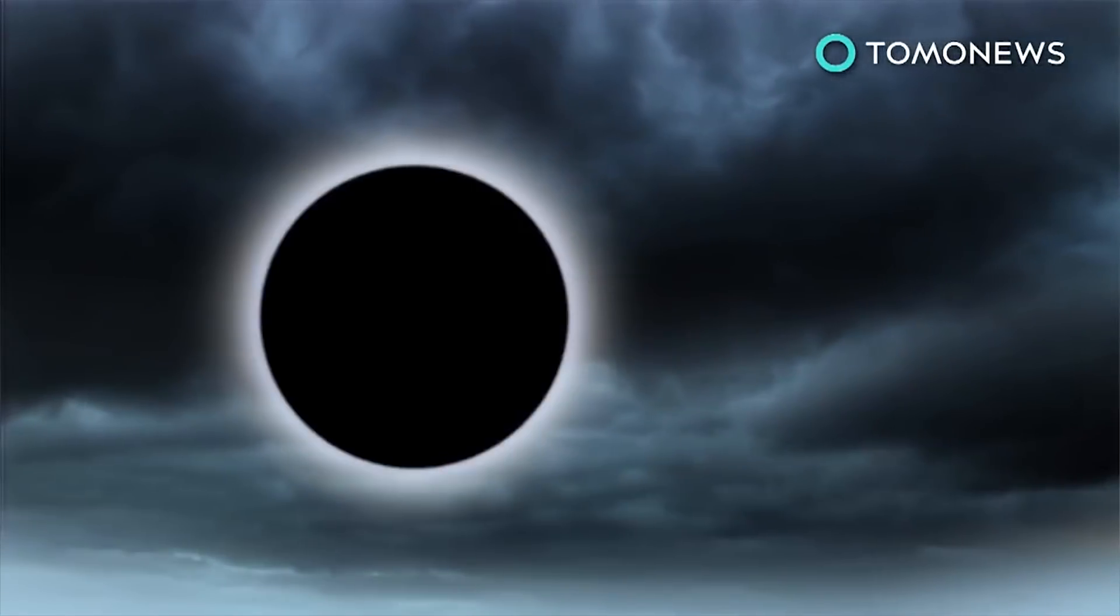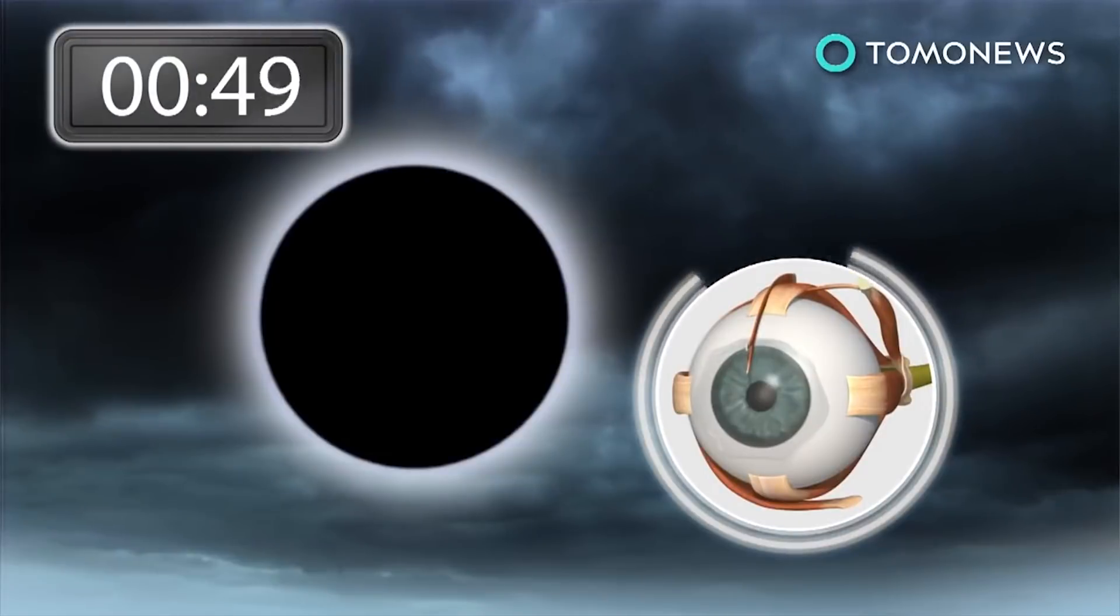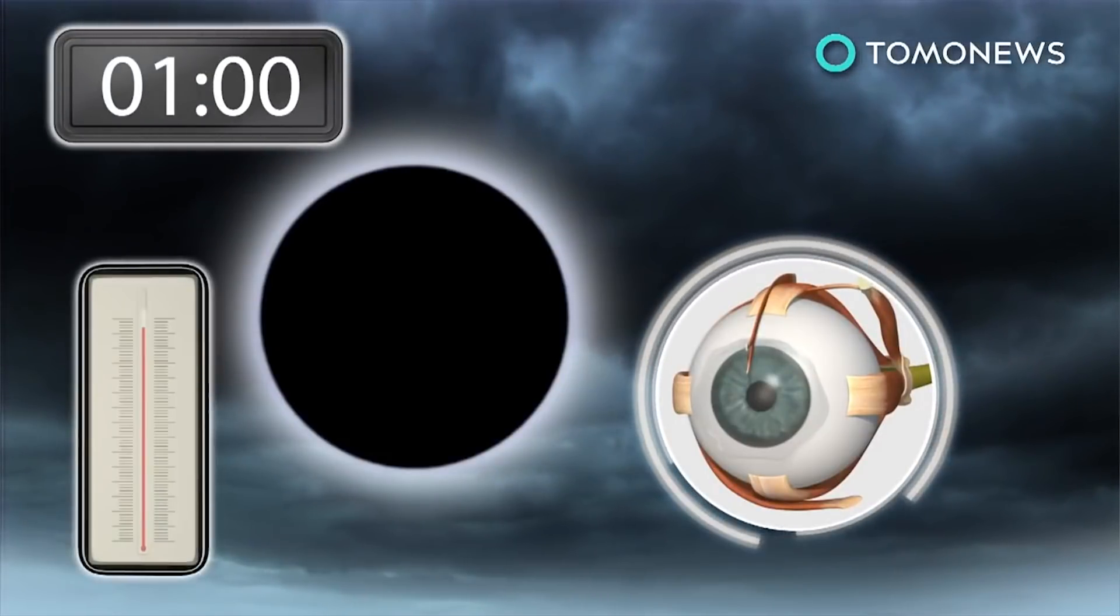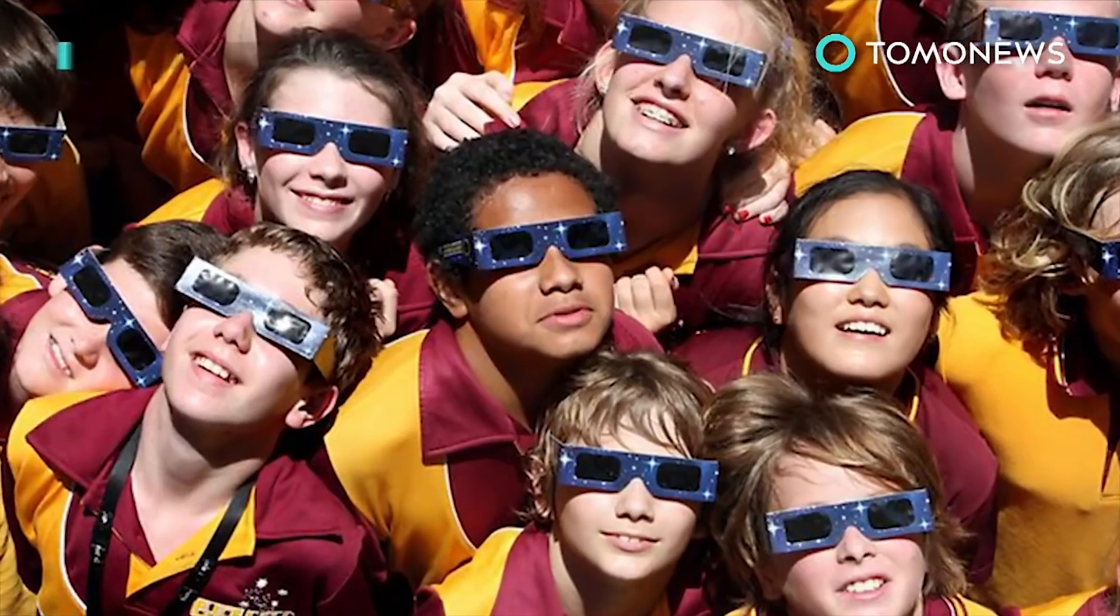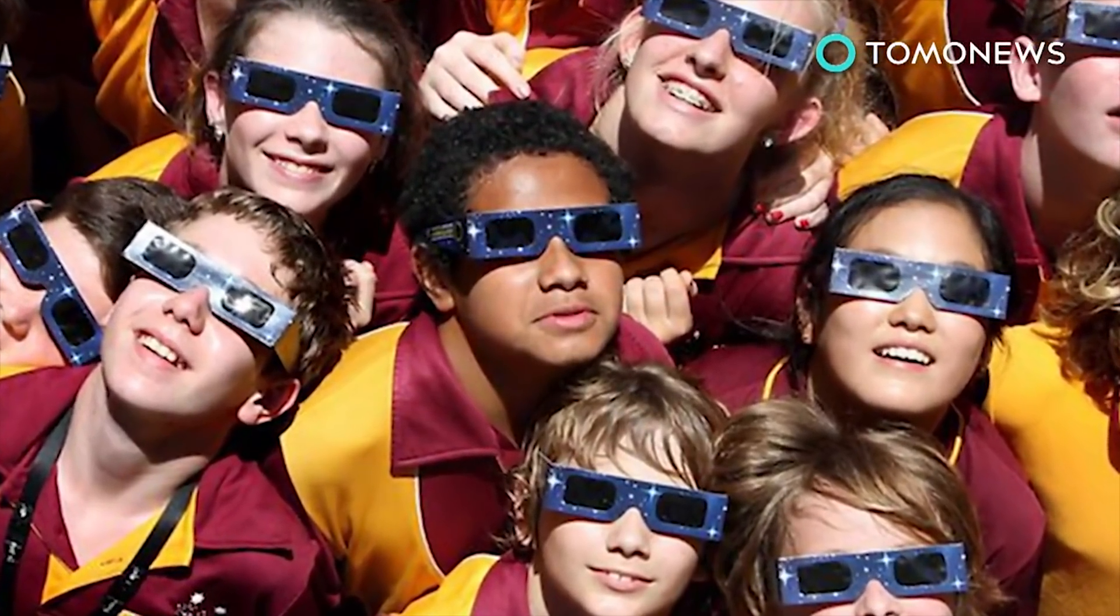Heating of the retina by one or two degrees is enough to damage retinal cells, which can occur within 30 to 60 seconds of staring at an eclipse. Eye experts advise anyone watching the eclipse to use eclipse glasses or the pinhole box method.